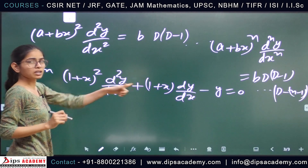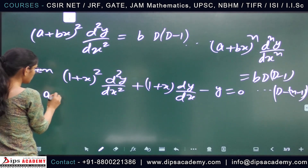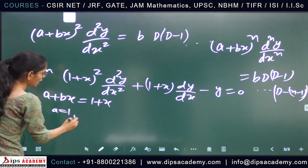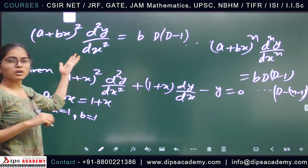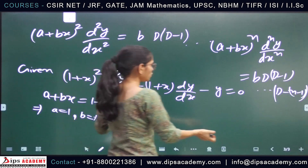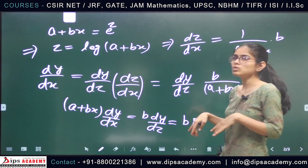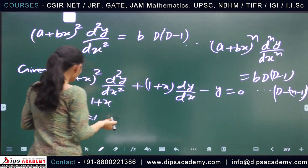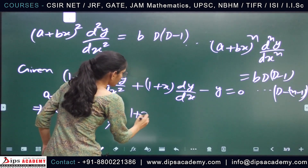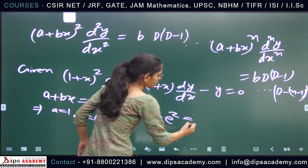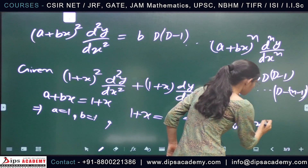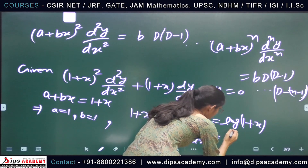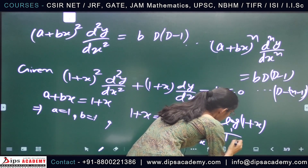Comparing the given differential equation to the Cauchy-Euler equation gives a = 1 and b = 1. We put 1+x = eᶻ, so z = log(1+x), and dz/dx = 1/(1+x). Then (1+x)² d²y/dx² = D(D-1) and (1+x) dy/dx = D, since b = 1.